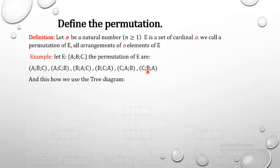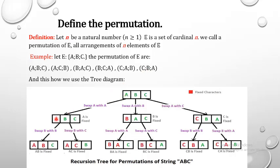We can use a tree diagram to show all permutations of abc. Fix a and swap b and c: that gives abc and acb — two permutations. Similarly, fixing b gives bac and bca. Fixing c gives cba and cab. These six are all permutations of the letters of abc, so we can write the word abc in six forms.